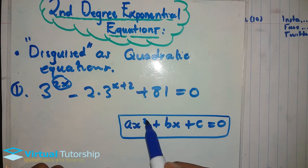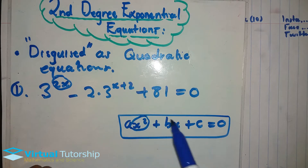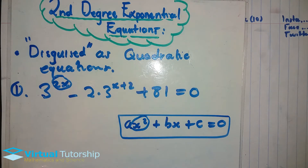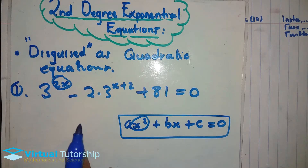It's a second-degree equation. Why? Because of the squared term. What you want to do is find and extract the squared term in this equation.